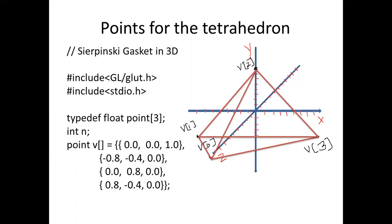Using this point structure we build another array called the v array. This v array has four rows representing four vertices: v0, v1, v2, and v3, where every row corresponds to one point with its x, y, and z values. So v0 has x = 0.0, y = 0.0, and z = 1.0. Similarly v1, v2, and v3 each have their own x, y, z values.